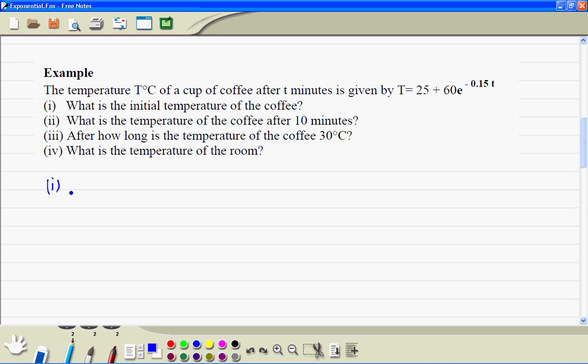Answer to part 1: So small t is equal to 0. So we write the formula. Capital T is 25 plus 60 times e to the power minus 0.15 times 0. So that's e to the power 0. e to the power 0 is 1, so this is 25 plus 60, so that's 85 degrees centigrade.